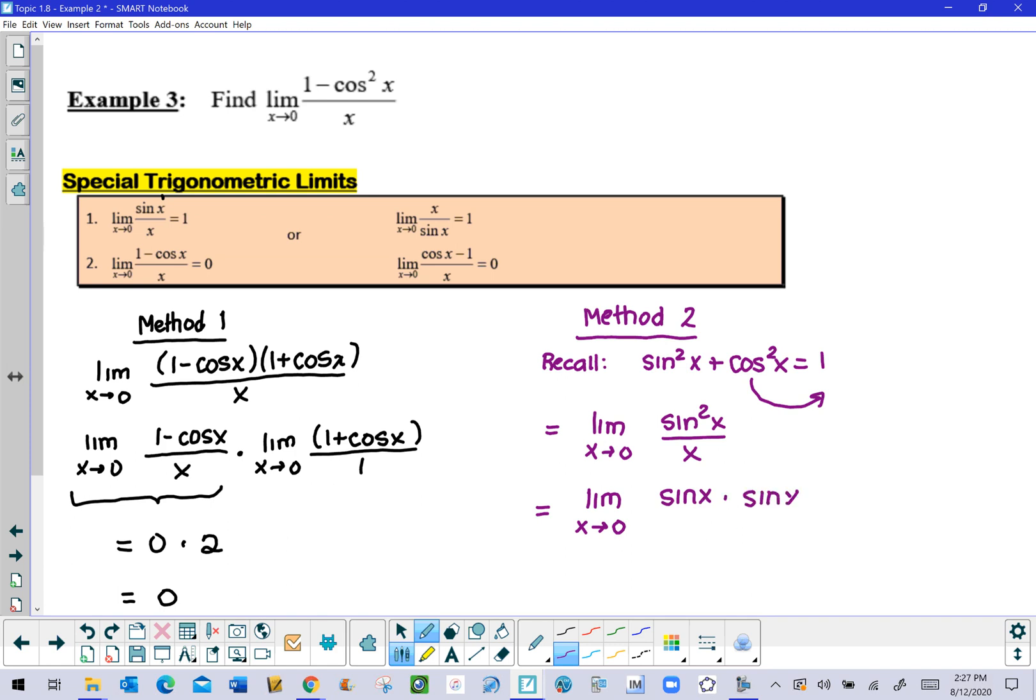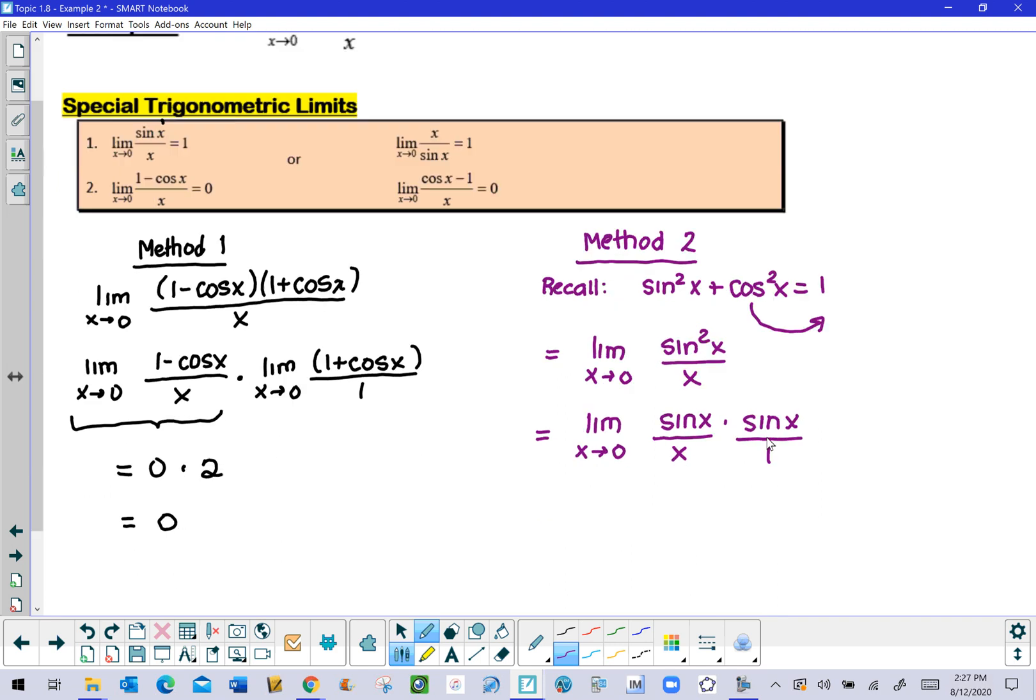Then I can put the first sin x over an x and maybe the second sin x would be over a 1, so that we can still maintain the top times the top would be the numerator, the bottom times the bottom would make up the denominator. And at this point we can invoke our property that says the limit of a product is the product of the two separate limits.